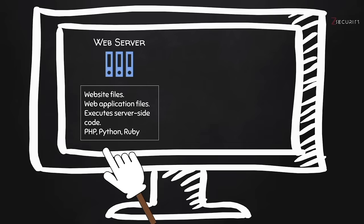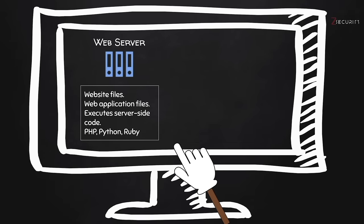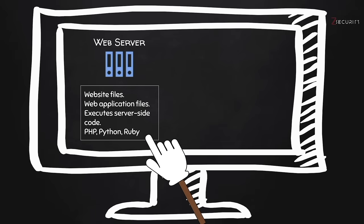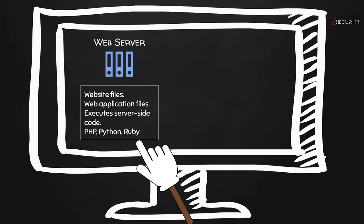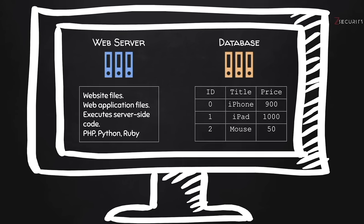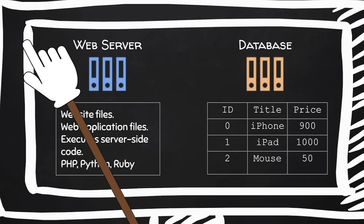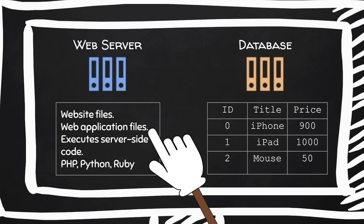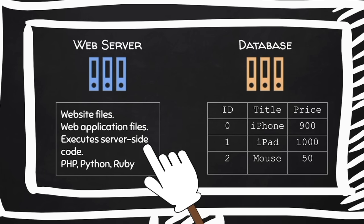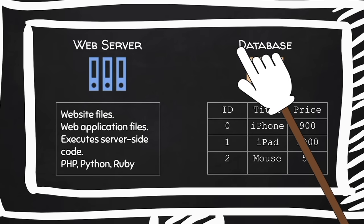The web application files actually contain code written in a programming language that can process and manipulate information — languages like PHP, Python, or Ruby. Most websites that do something useful, like a shop website, would be written in such a language. Another very common component of a website is the database. The web server contains files like images, styling files, and HTML files used to display the website, and then you have the web application files which run on the server side to process data.